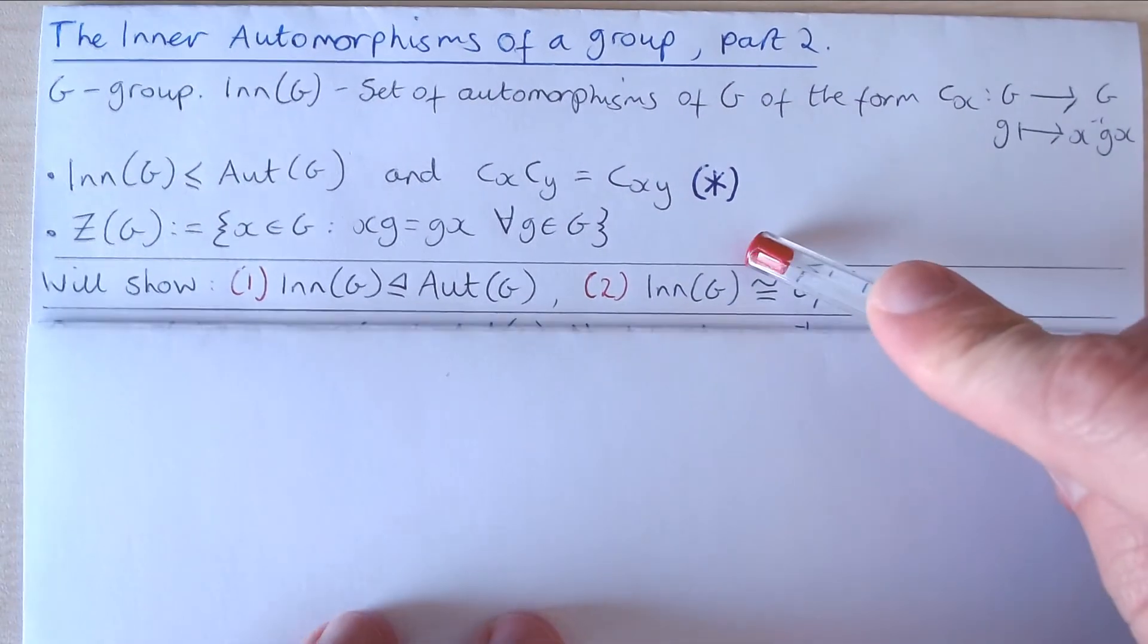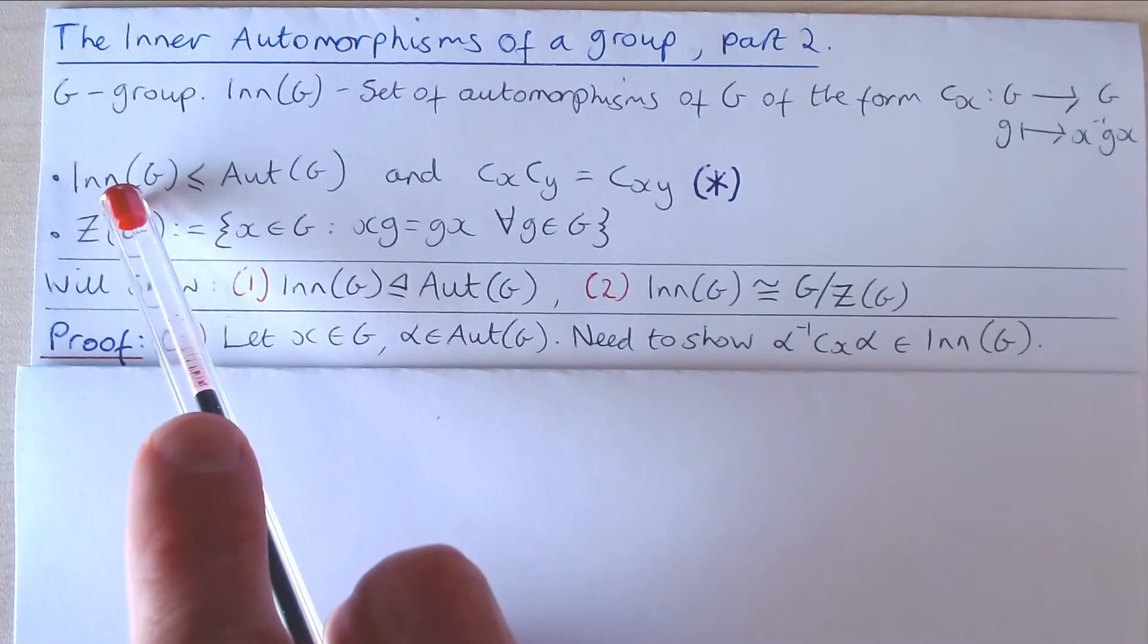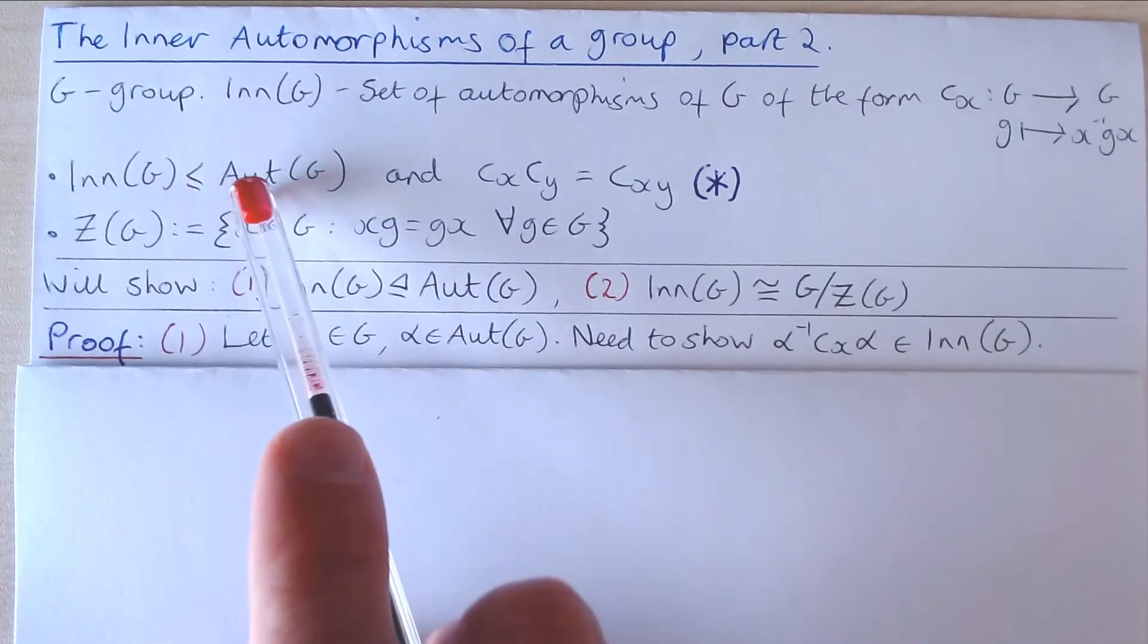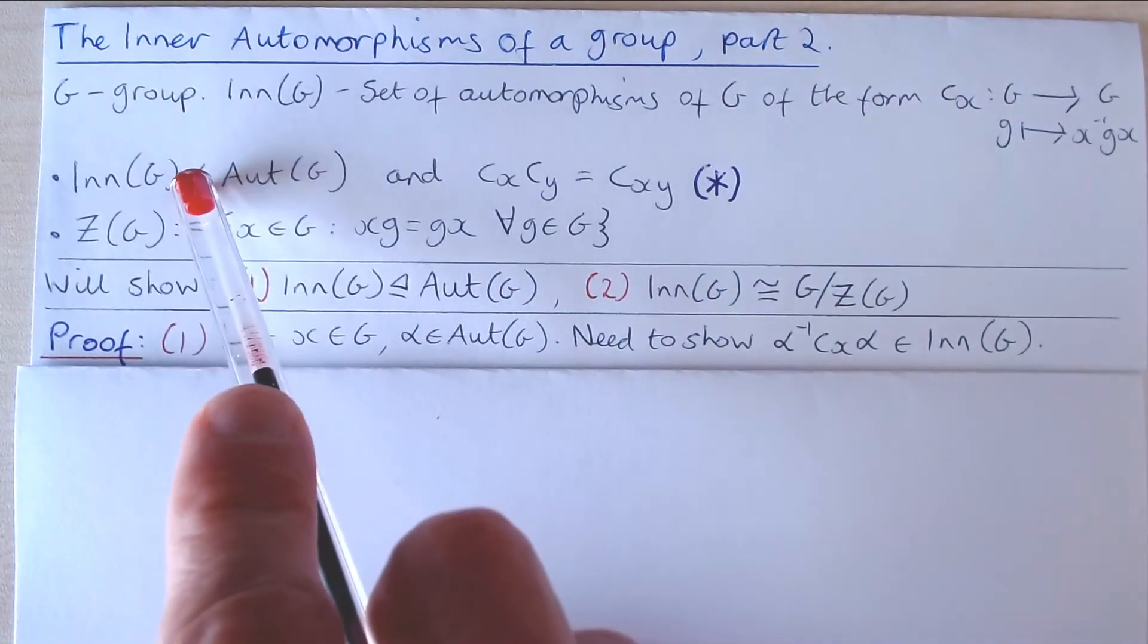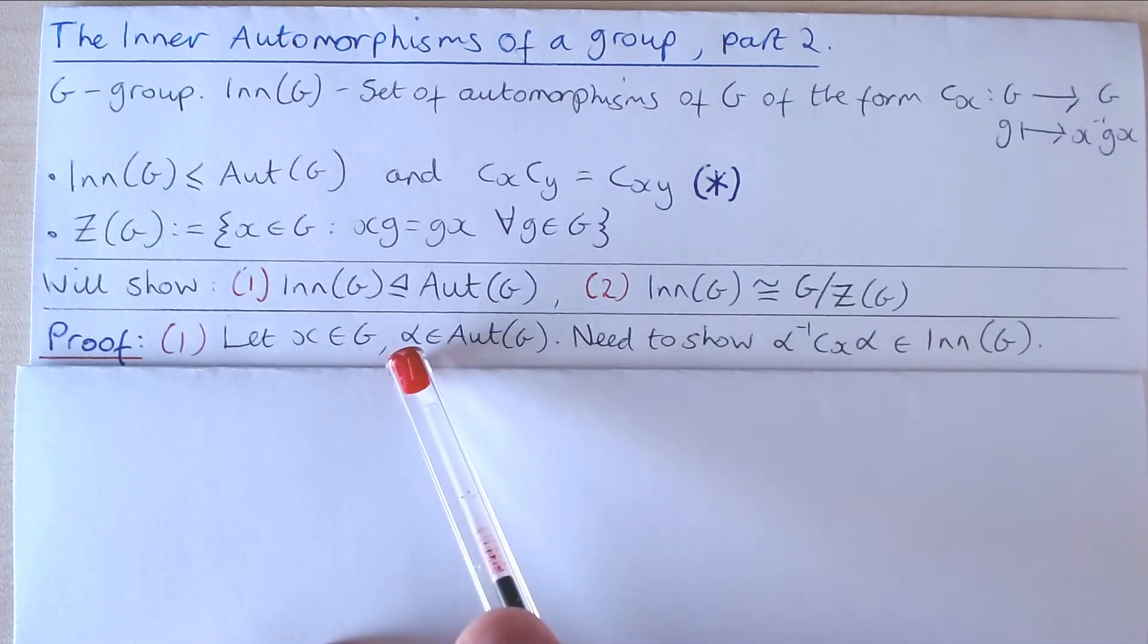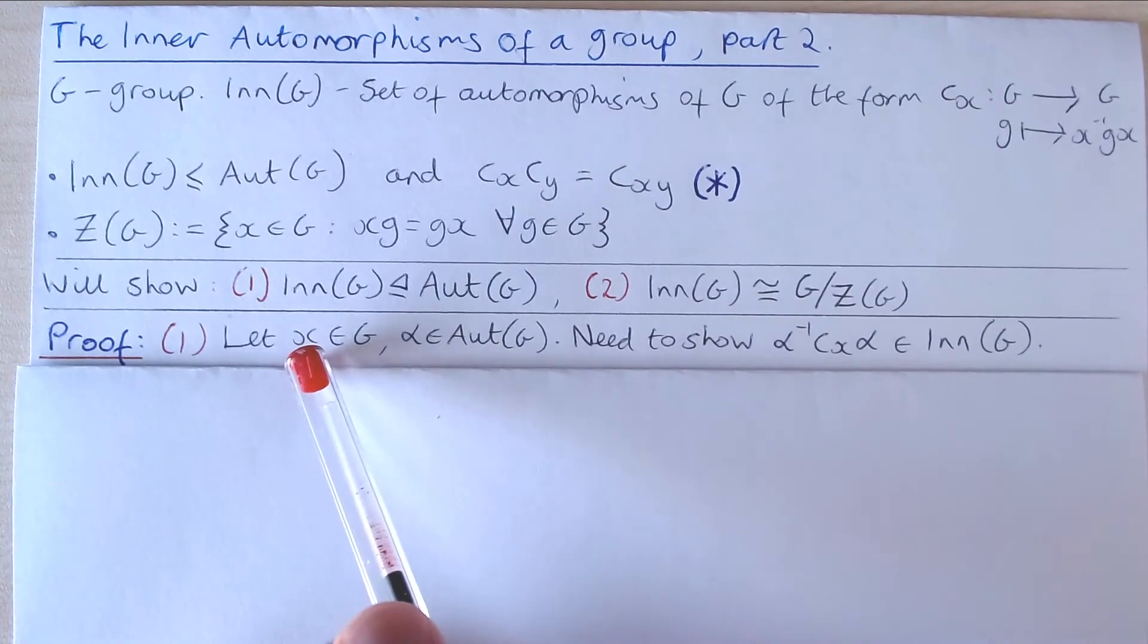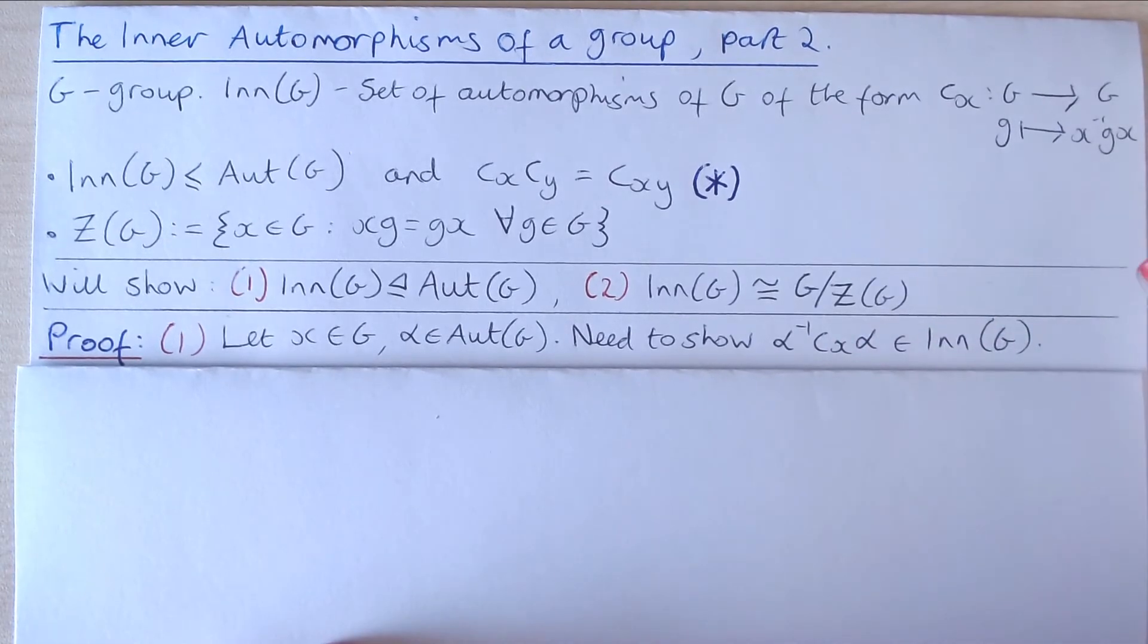For the first part, note that in the previous video we showed that Inn(G) is a subgroup of Aut(G). To show that it is a normal subgroup, it remains to show that for an arbitrary automorphism α of G and an arbitrary element x of the group G, α⁻¹C_xα is an inner automorphism of G.